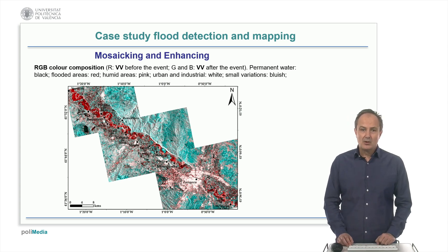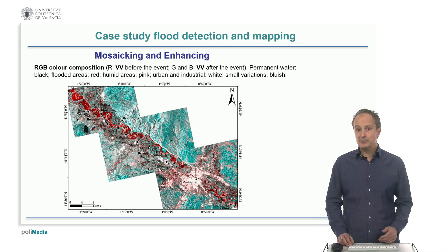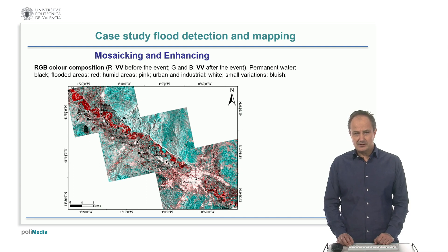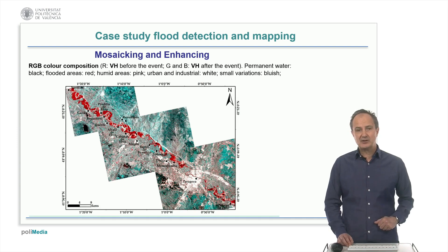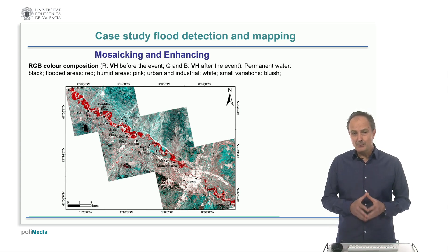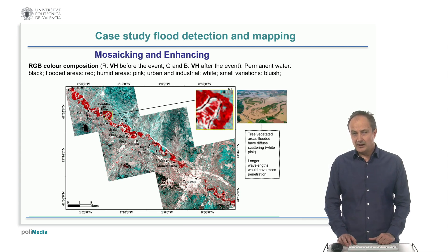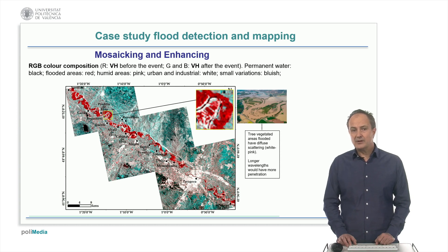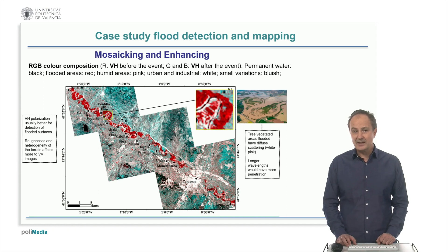In this RGB color composition of two vertical-vertical polarization images before and after the event, we see in black the permanent water due to specular reflection in both dates, and in red the flooded areas, since there was backscattering from the rough vegetation before the floods but not after. Other colors show small variations of different land uses. This mosaic represents a similar RGB color composition of two dates images, but using cross polarization — vertical-horizontal — instead of equal polarization images. In this detail, we can see how vegetated flooded areas still have diffuse scattering in both dates, presenting a white-pink color. Since roughness and heterogeneity of the terrain affect equal polarization images more, cross polarization usually works better for enhancing flooded surfaces.